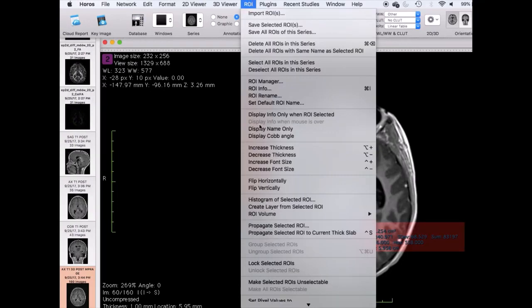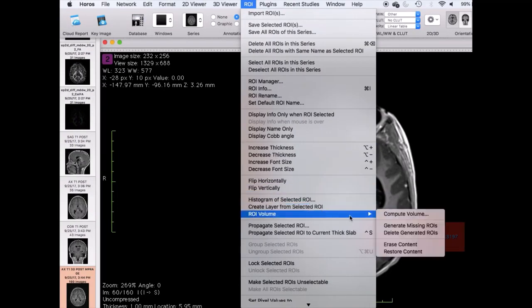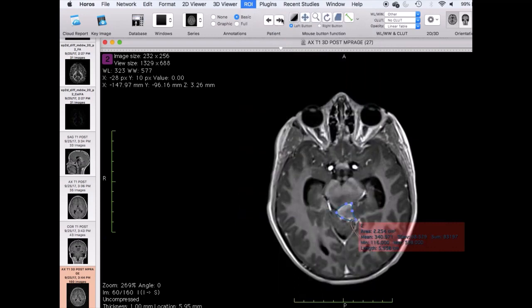Next, select ROI, ROI volume, and generate missing ROIs. This will fill in any missing ROIs in the slices.